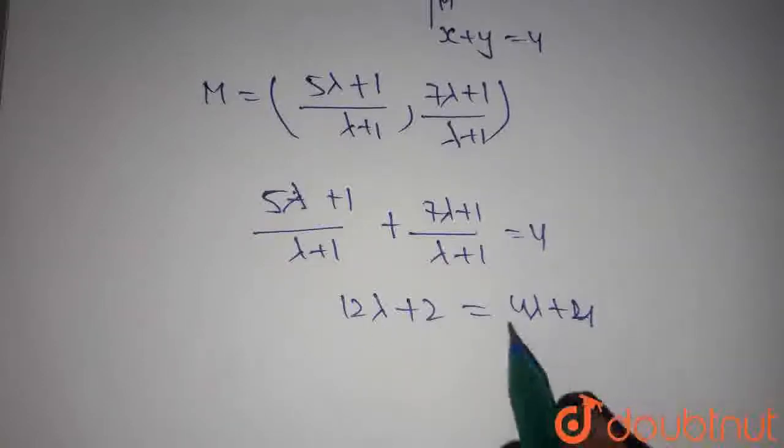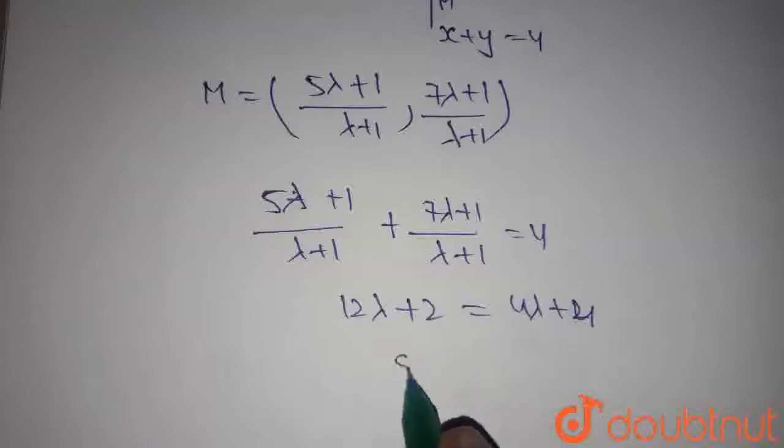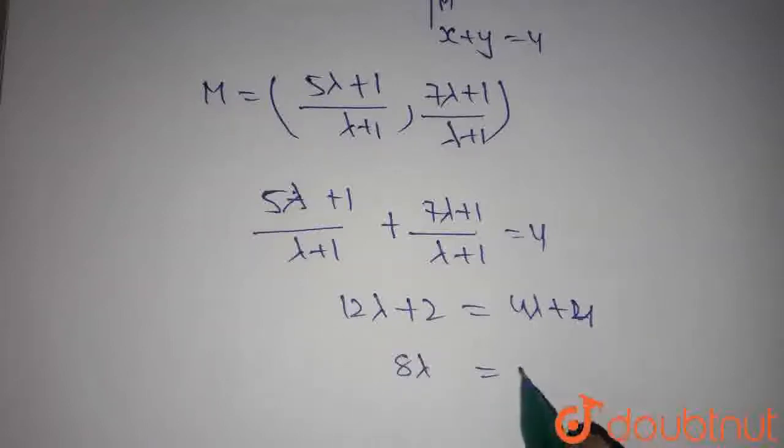If we take 4 lambda to this side and 2 to this side, we get 8 lambda equals 2.